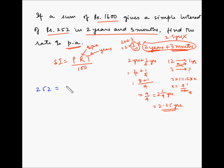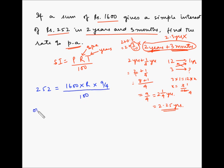Now let's put this information into the formula. Simple Interest = 252, Principal = 1600, Rate = R% per annum (to find), and Time = 9/4 years, all divided by 100. We can cancel the two zeros in 1600 with the 100 in the denominator, and 4 fours are 16, leaving us with a simplified equation.